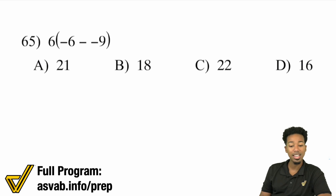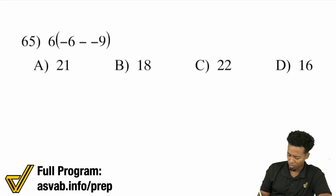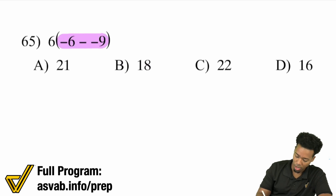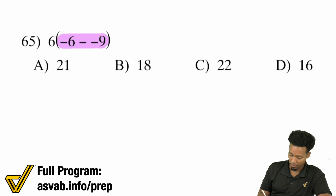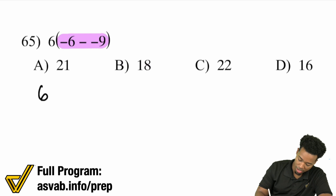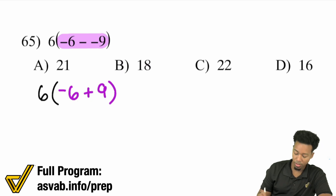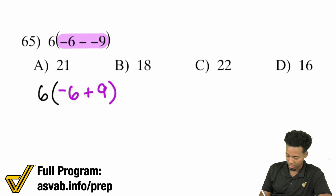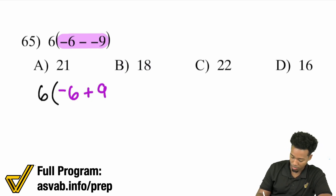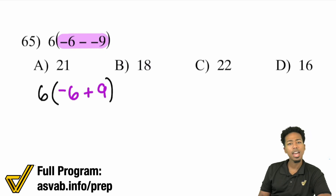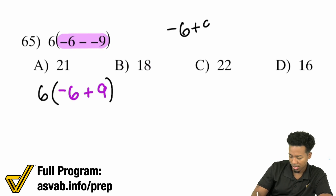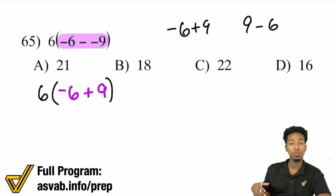Number 65: we have 6 multiplied by (negative 6 minus negative 9). This one seems confusing, but it's still really straightforward. Take care of the parentheses first. Remember that minus a negative means what you'll have is addition — subtracting a negative is the same as adding.